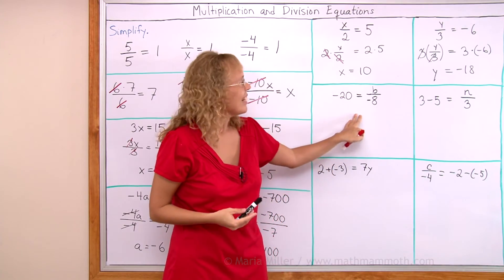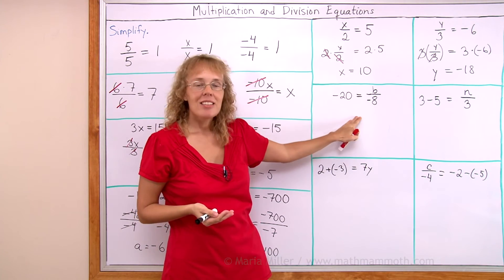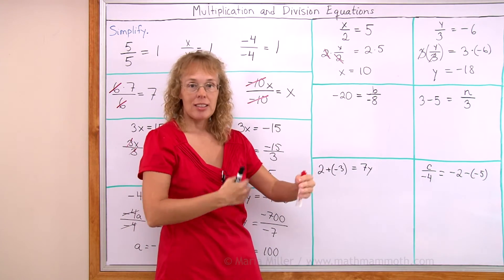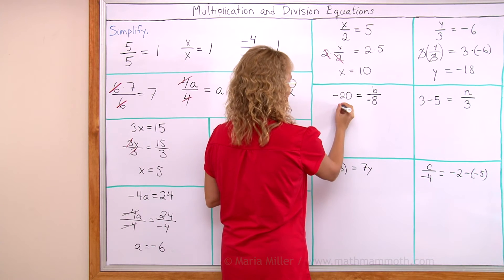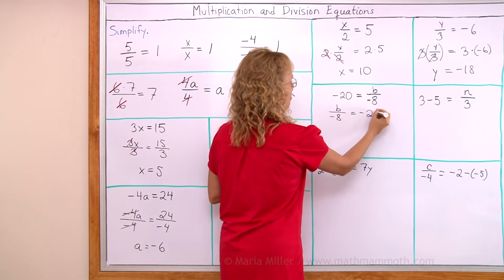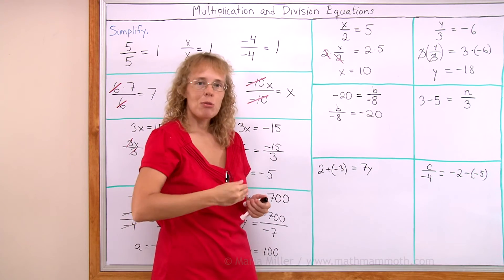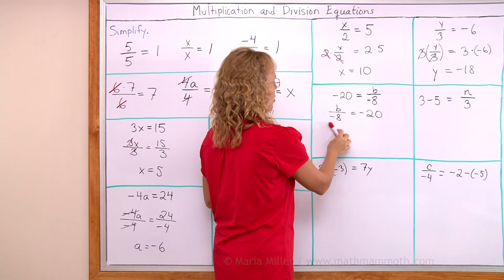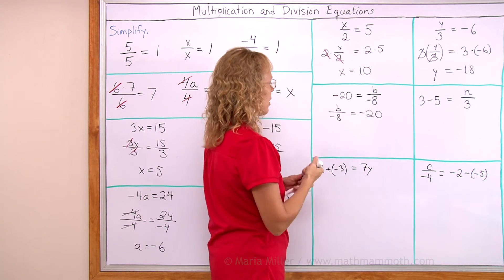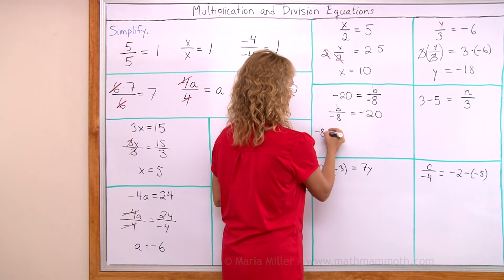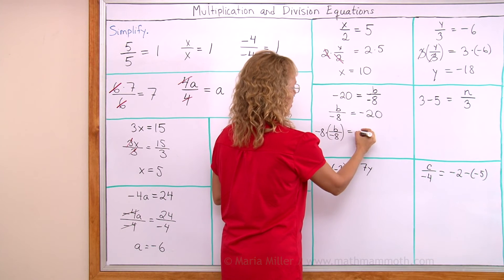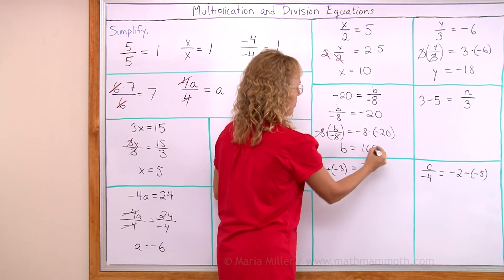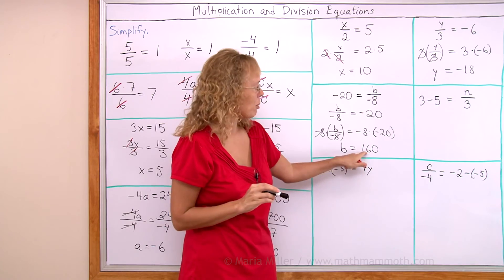Now, what about here? This is the exact same type of equation as here. But the variable divided by something is on the right side. If this confuses you, just flip the sides. Switch them. Write it again. Writing this side here. And that side over there. It's the same equation. You know? If x equals 5, then 5 equals x. You can flip the sides. And now, okay, b is divided by some number. So we need to multiply by this number. Multiply by negative 8. Both sides get multiplied by negative 8. And then here negative 8 times negative 20. This now leaves b alone. b is 160. Remember negative times negative gives you a positive.